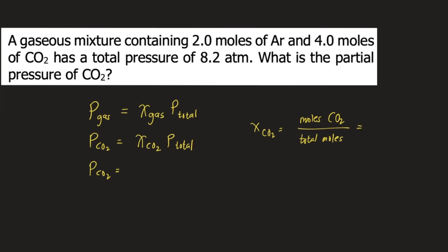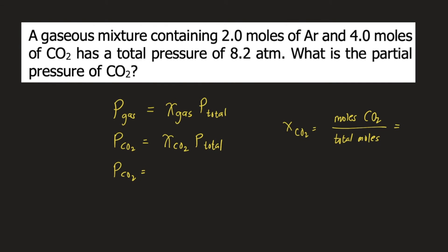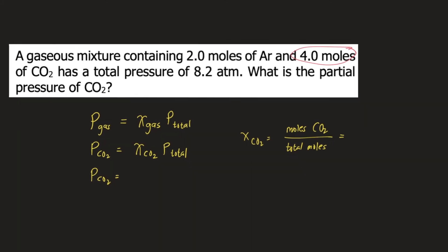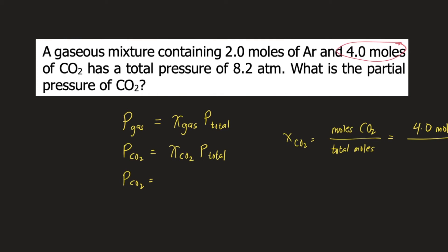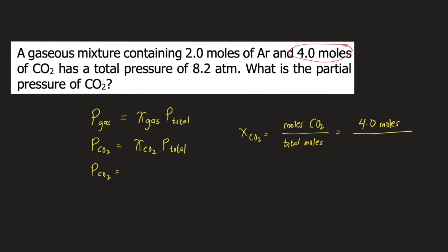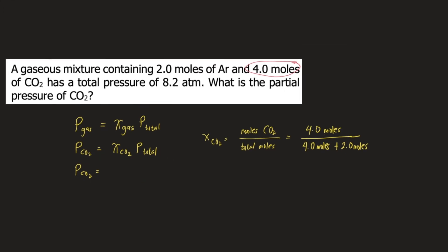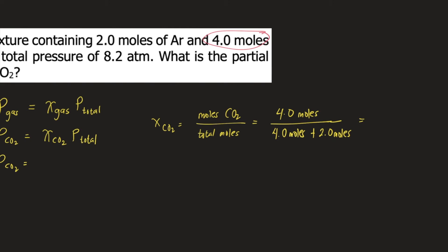In our problem, we are given the moles of carbon dioxide, which is 4.0 moles, divided by the total moles. The gaseous mixture contains 2 moles of argon and 4 moles of carbon dioxide, so the total moles would be 4.0 plus 2.0 moles. The mole fraction of CO₂ would be 4.0 moles divided by 6.0 moles.